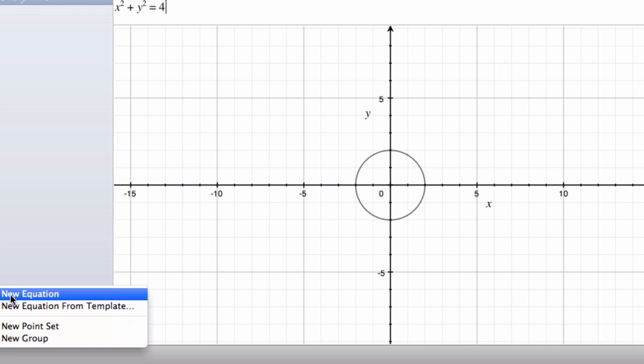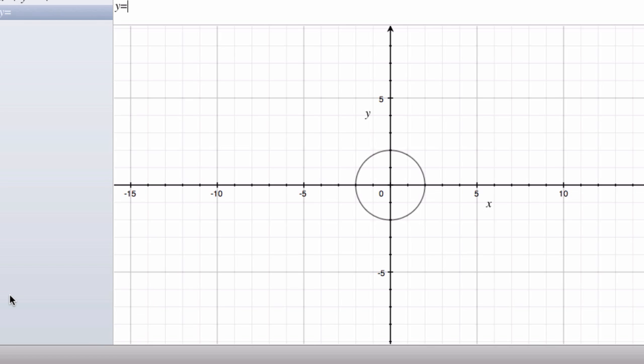And then we have a parabola. So here we have x squared, x squared plus y equals 4. So there you can see how the parabola and the circle interact.